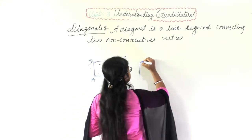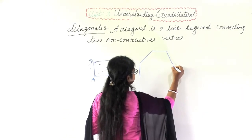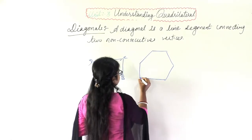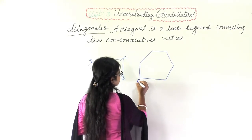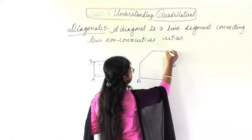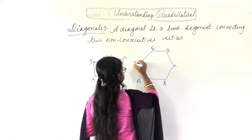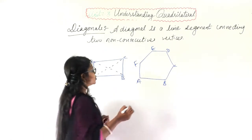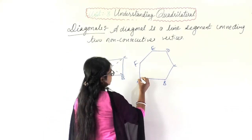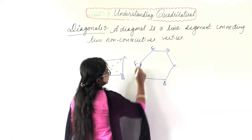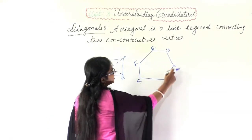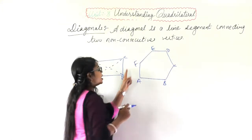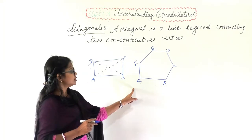Similarly, if I draw a hexagon named ABCDEF — I have to find its diagonals. The sides are AB, BC, CD, DE, EF, and FA. So what will be the diagonals for this?